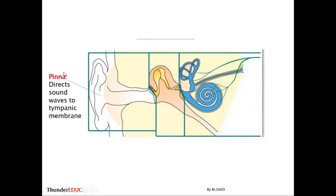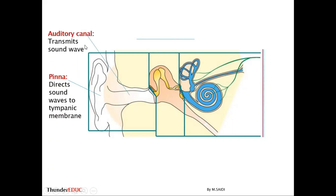The first part is the pinna, which is the outside part of the ear. It collects and directs sound waves to the tympanic membrane. It has curves so that it can collect sound from any direction, and then sends it to the tympanic membrane via the auditory canal. The auditory canal then transmits the sound waves to the tympanic membrane.